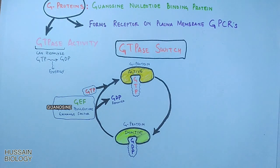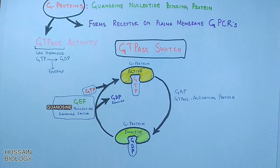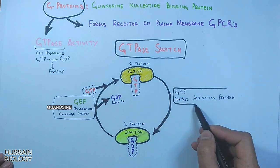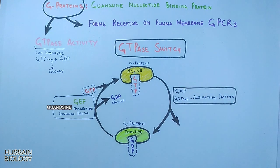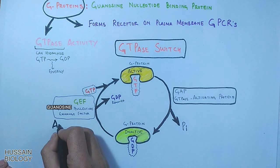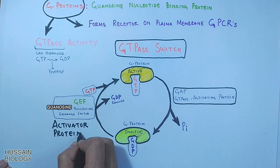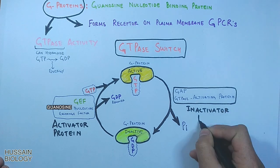So this work is done by GAP protein — the GTPase activating protein — which removes the terminal phosphate from GTP and transforms it into GDP, thus rendering the G-protein into its inactive form. By these functions we can see that GEF is the activator protein whereas GAP is the inactivator protein.